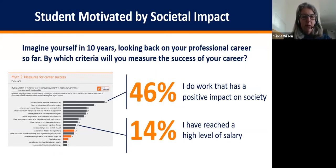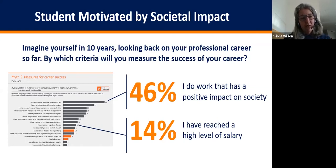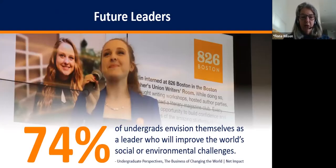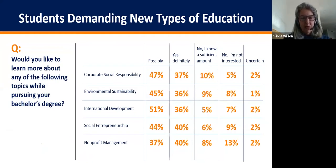That sharply contrasts with data we have about Gen Z, which shows that this current generation of university students are deeply aware of big issues in the world — climate change, poverty, inequality, and social justice. Wonderfully, they also want to use their educations and careers to make a positive impact: almost 50 percent see doing work with positive societal impact as their number one measure of career success. A Net Impact study shows nearly three-quarters of undergrads see themselves as leaders who will improve the world's social or environmental challenges.